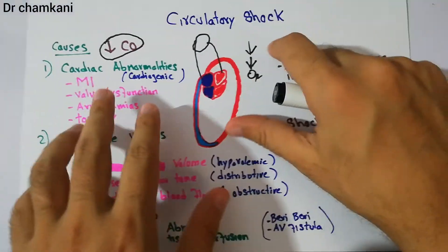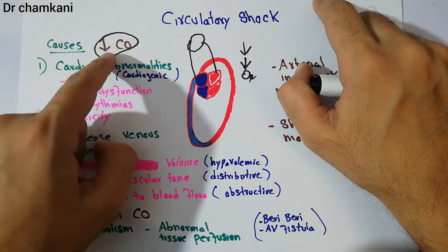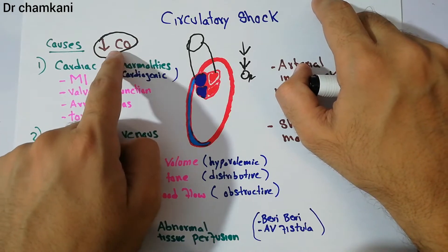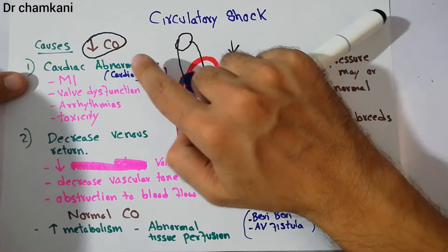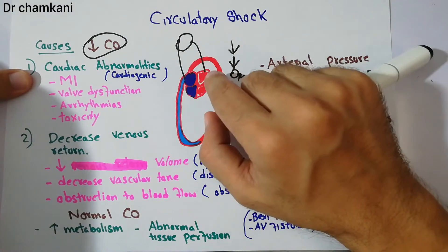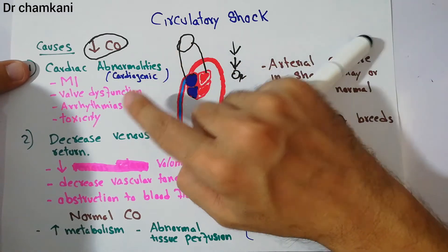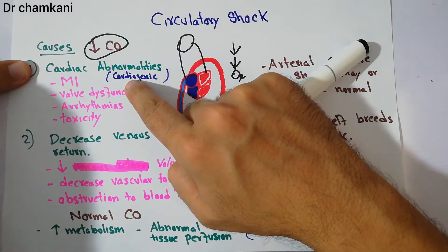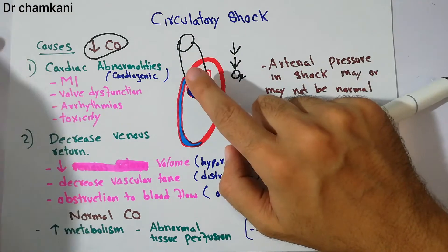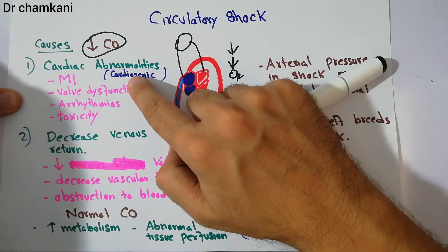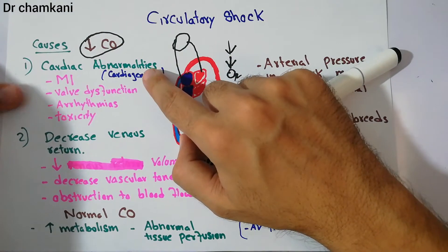First, we will discuss shock with decreased cardiac output. The circulatory shock in which there is low cardiac output may be cardiac or due to decreased venous return. When cardiac abnormalities cause the heart to be unable to pump enough blood and it leads to shock, that kind of shock is known as cardiogenic shock.